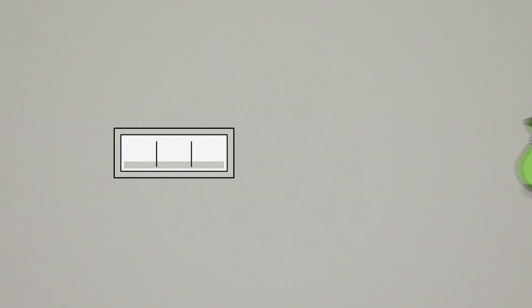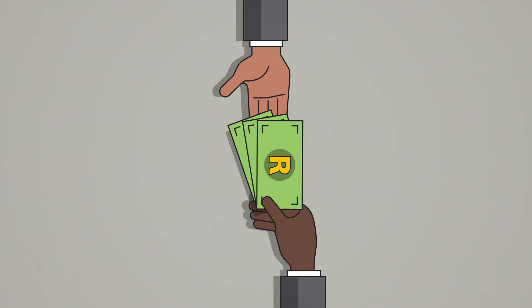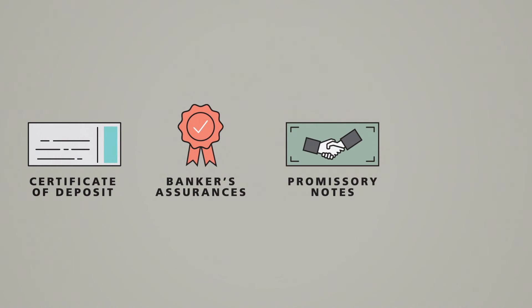Money market instruments are essentially short-term loans which earn regular interest, usually with a repayment period of less than a year. They include certificates of deposit, banker's assurances, promissory notes, and company commercial paper.